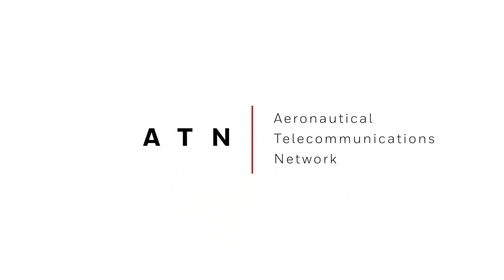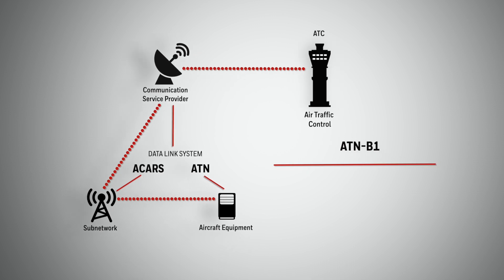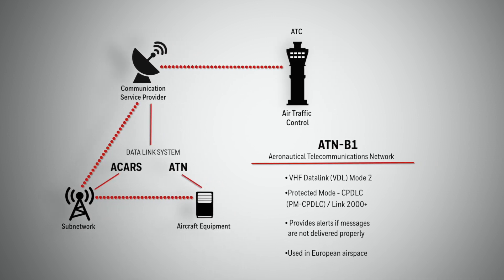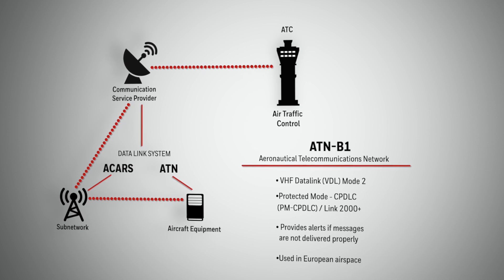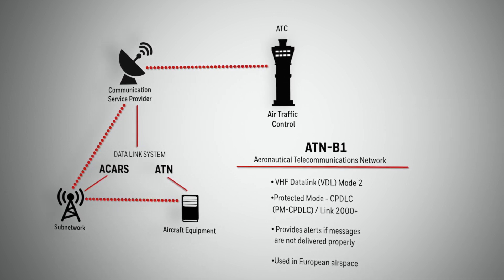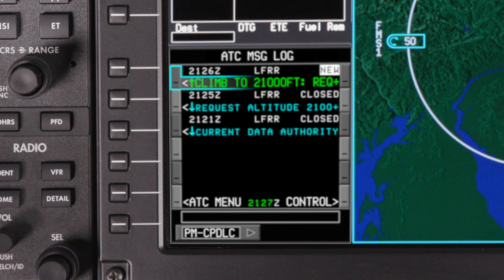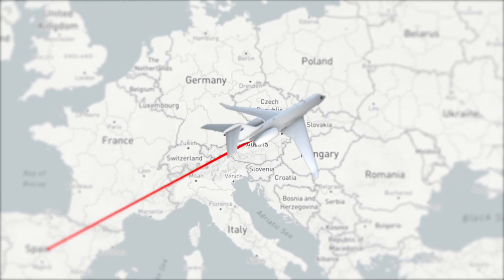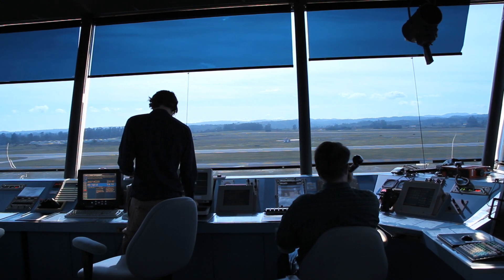ATN's CPDLC uses the Aeronautical Telecommunications Network. B1 stands for Baseline 1. ATN uses VHF Datalink Mode 2 service. ATN is also known as Protected Mode, or PM CPDLC, and may be referenced as Link 2000 Plus in some older documentation. Compared to FANS, ATN provides confirmation of message delivery without a loss of message integrity, meaning that messages can't be delivered partially or to the wrong aircraft. ATN's CPDLC is used in some European airspace. Compared to FANS, ATN has a more limited message set — for example, ATN does not support emergency message elements, so during an emergency you'll have to contact ATC by voice.